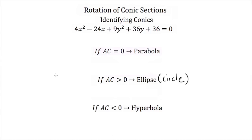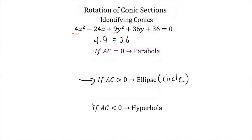Let's try this. Here we have the equation 4x squared minus 24x plus 9y squared plus 36y plus 36 equals 0. We need to find our a and c terms. My a is the coefficient of x squared, so a equals 4. And my c is the coefficient of y squared, so c equals 9. If I take 4 and multiply it by 9, that's equal to 36, which is greater than 0. So this is an equation of an ellipse, or possibly a circle.